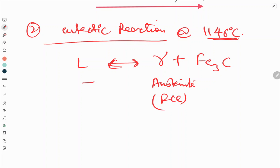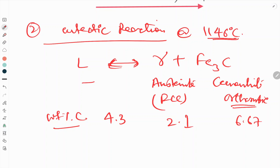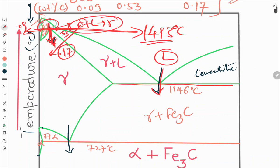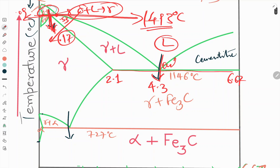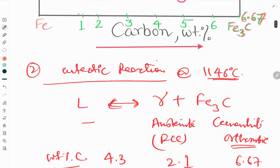This is austenite, that means FCC structure. This is cementite, means orthorhombic structure. About weight percent of carbon: this is 4.3, this is 2.1, and this is 6.67. So you will see here this is 2.1, this is 4.3, this is 6.67. So this is the eutectic line.